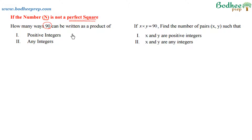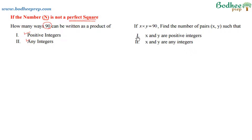The first part asks for the product of either positive integers or any integers. The second question sounds very similar but variables have been introduced: if x times y equals 90, find the number of pairs (x, y) such that x and y are positive integers, or x and y are any integers. The process of solving all four questions is the same — we just need to be careful about what has been asked and what has been given.